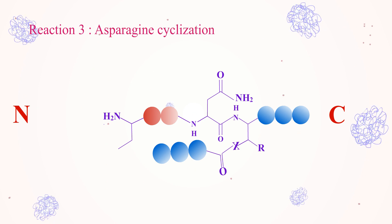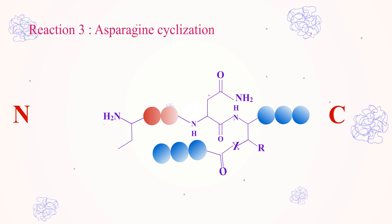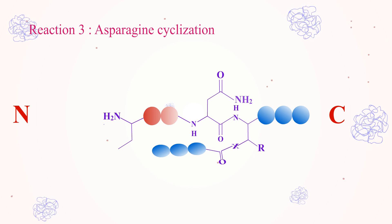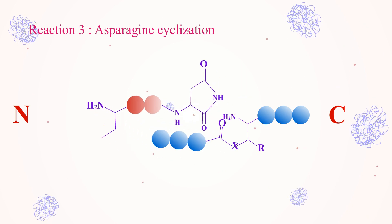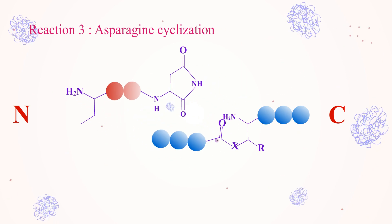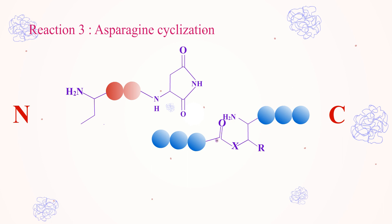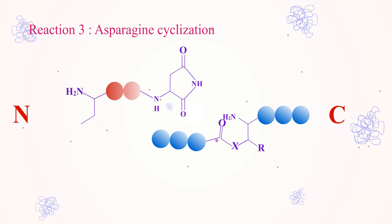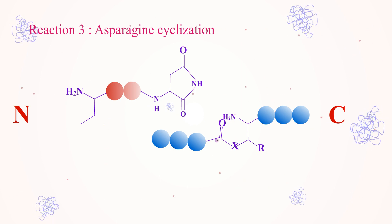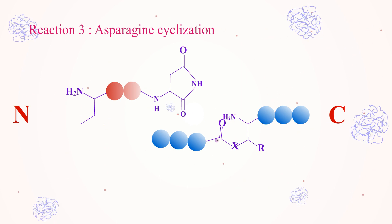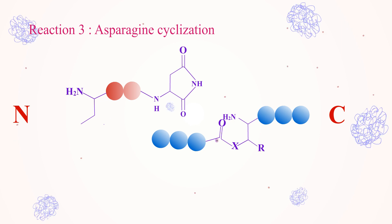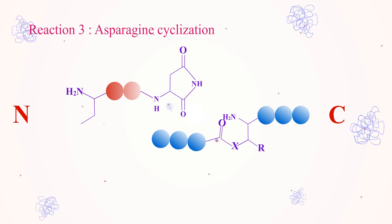Reaction 3: Asparagine cyclization. The third reaction ends with the formation of a C-terminal aminosuccinimide. The amide side chain of asparagine at the C-terminal splice junction will attack its own carbonyl carbon present on the main chain, leading to the cyclization of the asparagine residue to form a C-terminal aminosuccinimide in the excised intein.